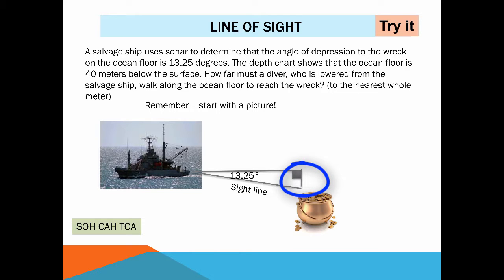So I have another little piece here that I can label. The distance from the surface of the ocean down to the wreck is 40 meters. Alright so I think I've got all the important information on there and what is it that I'm asked to find?